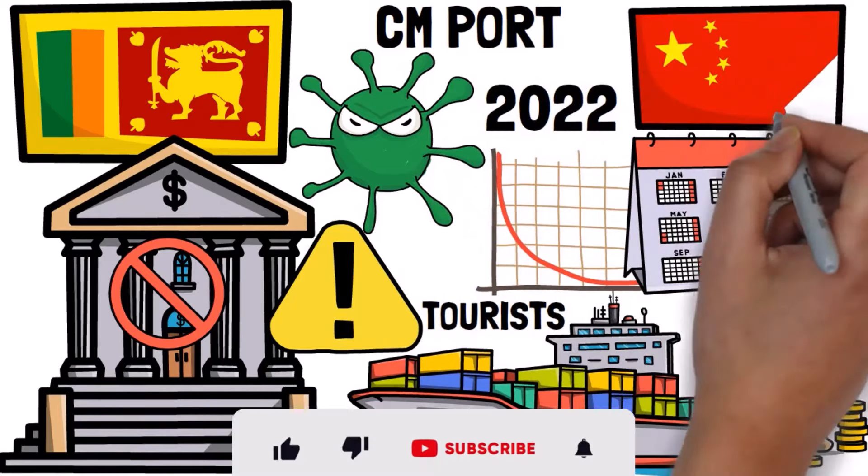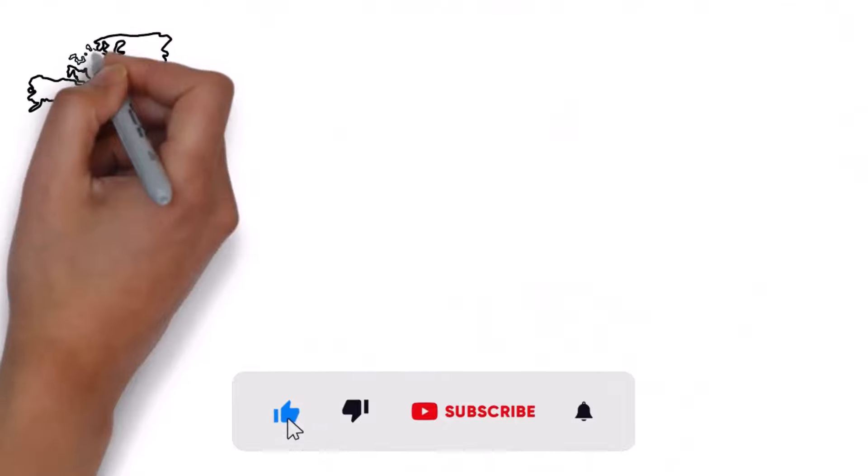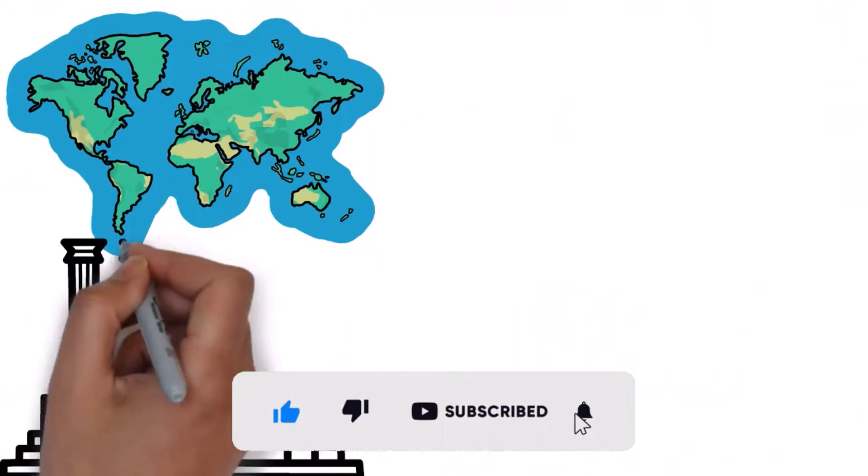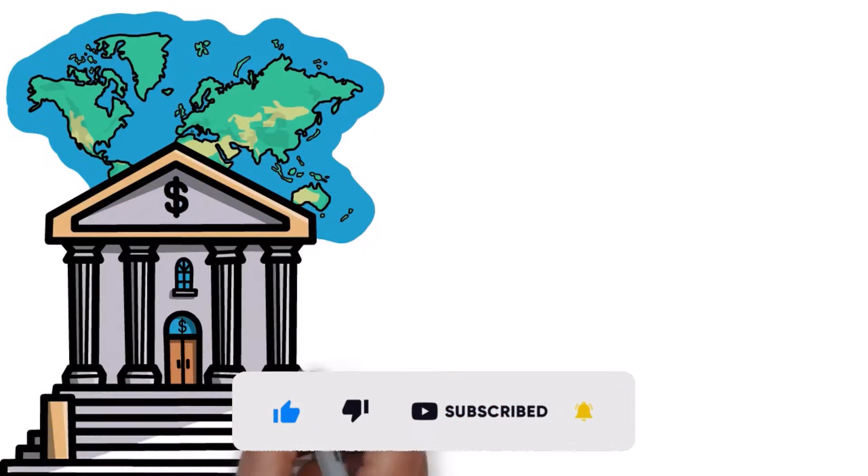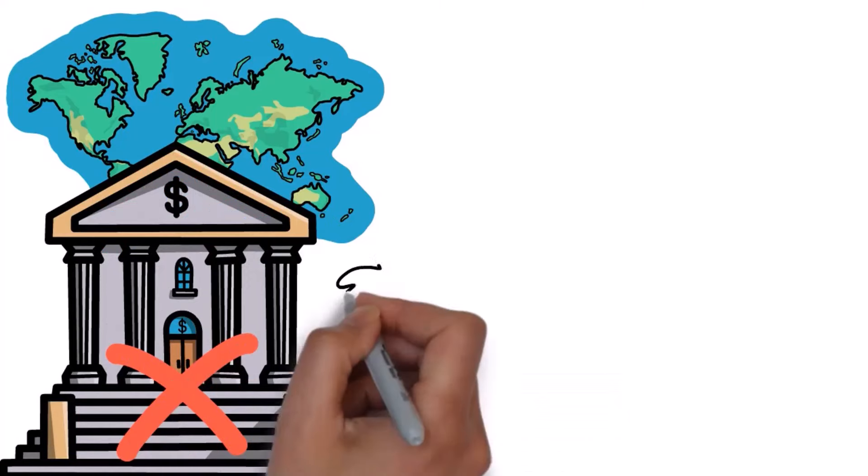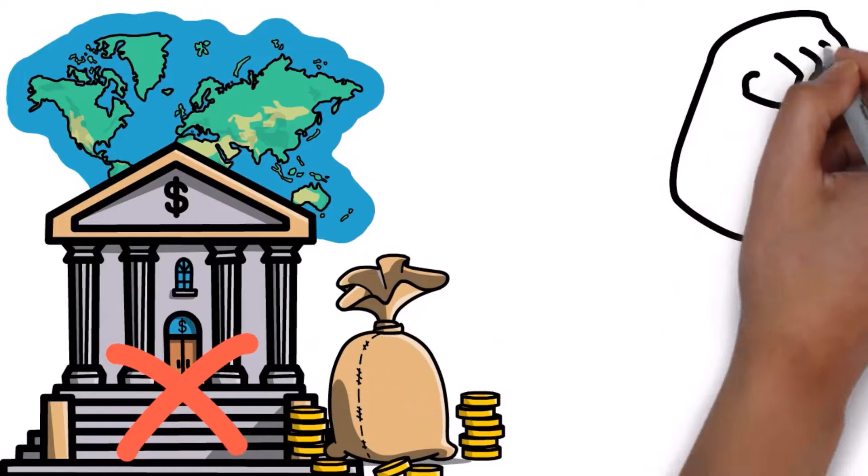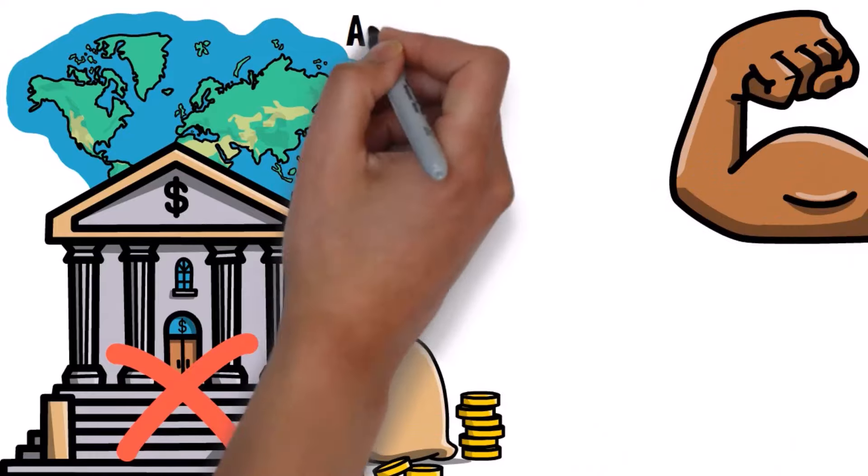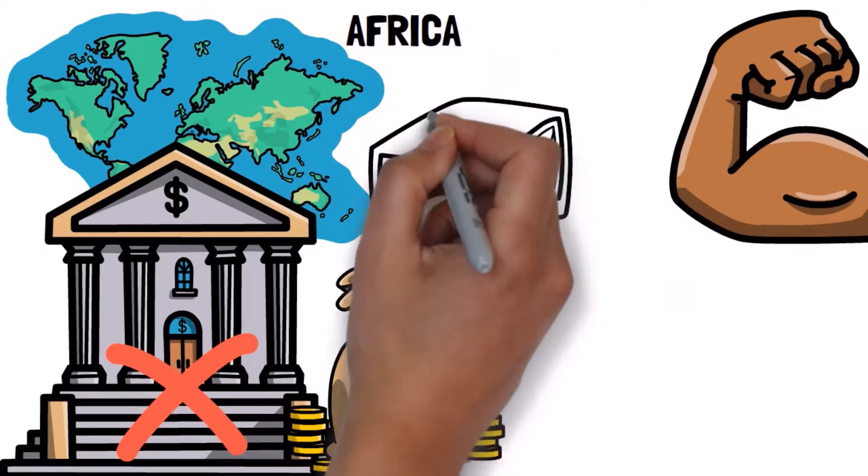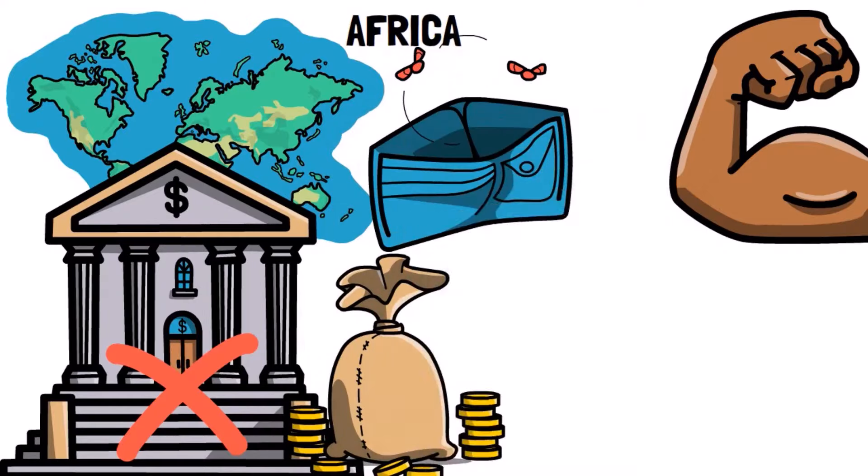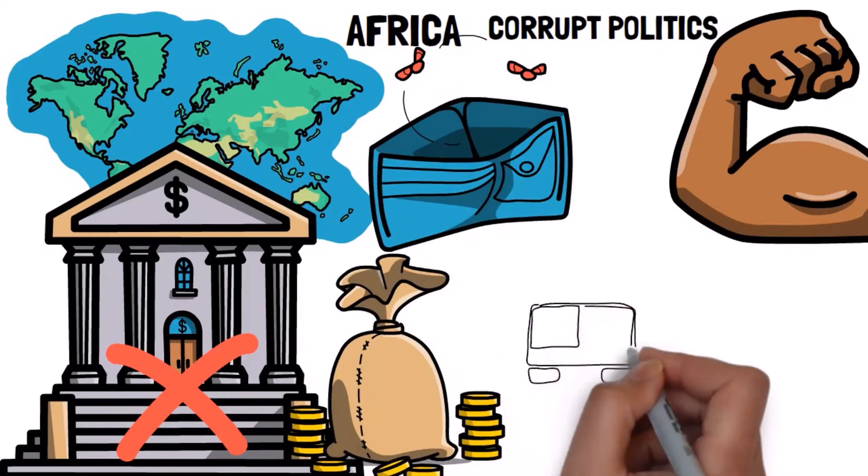In the end, China still came out ahead, even if it seemed like they lost. This kind of situation, where countries can't handle their Chinese debt, has made people worry that China is using its money to gain more power in the region. And it seems like Africa, with many poor and developing countries and a history of corrupt politics, is the next target.